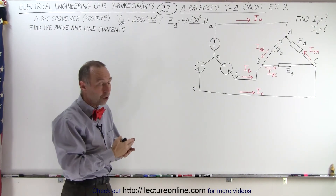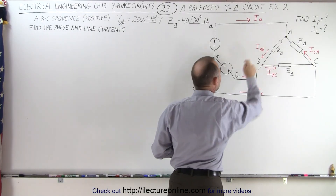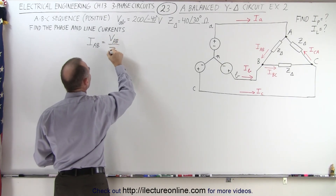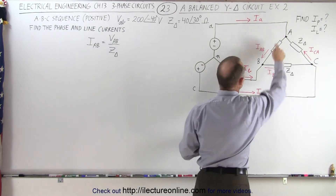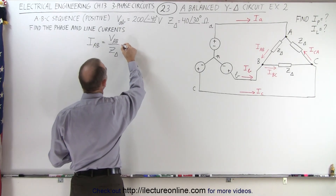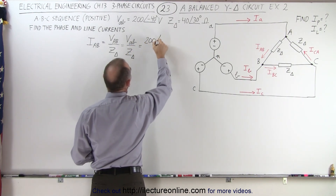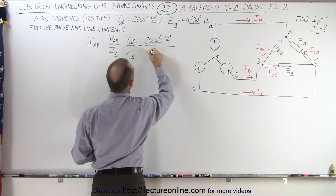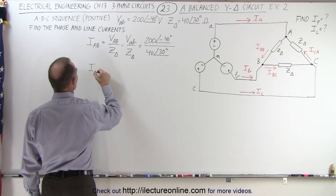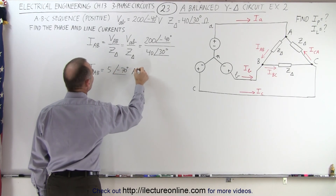Remember that in a balanced load, all three impedances must be exactly the same. Let's start by finding the phase current IAB, which equals the voltage VAB divided by the impedance. VAB is the same voltage between A and B, so this is written as 200 with a phase angle of minus 40 degrees, divided by 40 with a phase angle of positive 30 degrees. The phase current IAB equals 5 amps with a phase angle of minus 70 degrees.